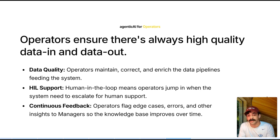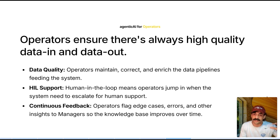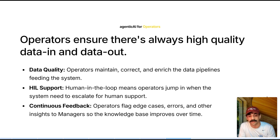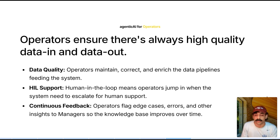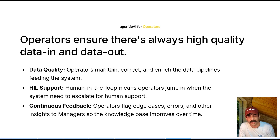Operators maintain correct and enriched data pipelines feeding the system — things like, 'is this person a client?' or 'we have 50 Johns, which John are they referring to?' Human-in-the-loop escalates to a human when needed. And then continuous feedback — this is where human reinforcement learning comes in, where operators and managers talk: 'this thing isn't working appropriately, I think it was off here, here, and here.' The manager updates the SOP or playbook, and the operator flags the issues. The manager fixes it.